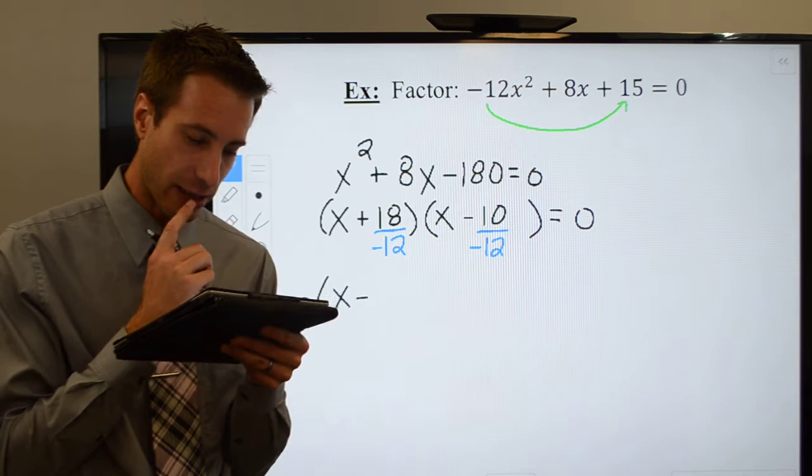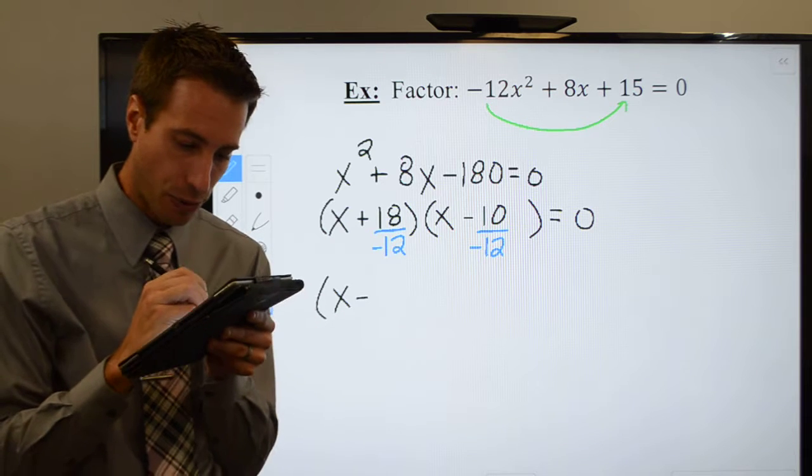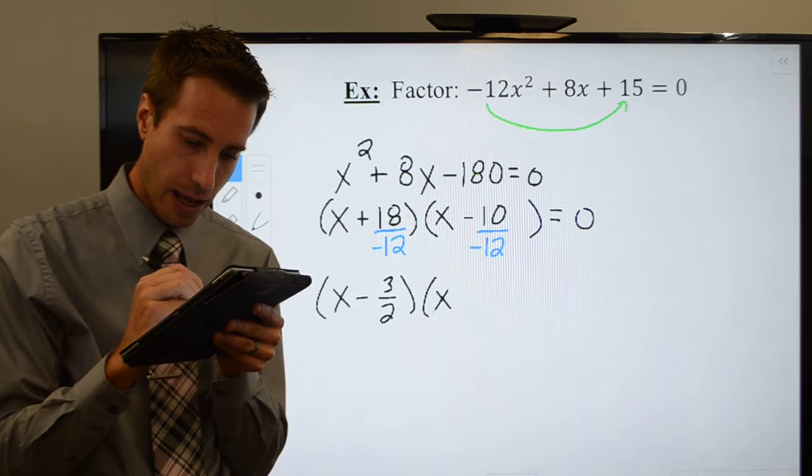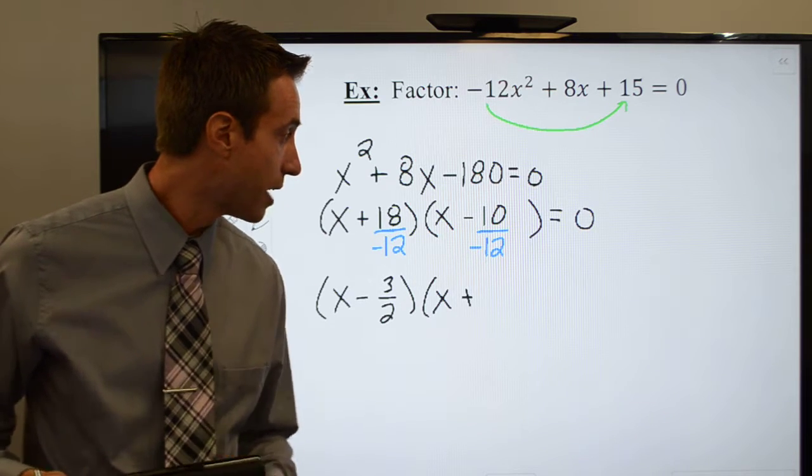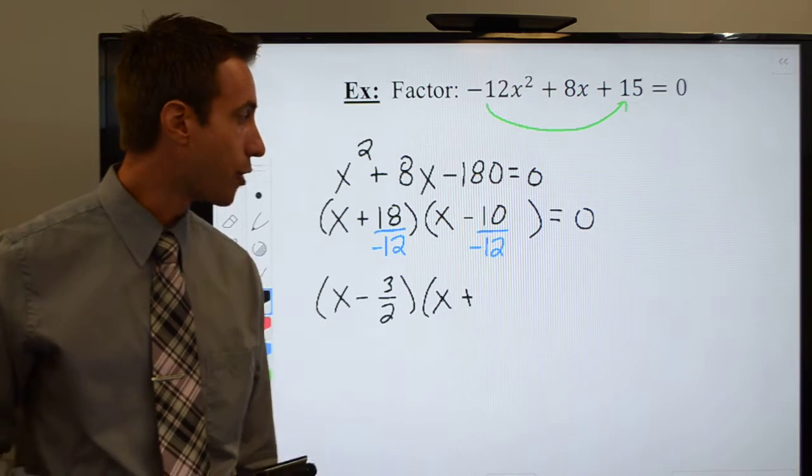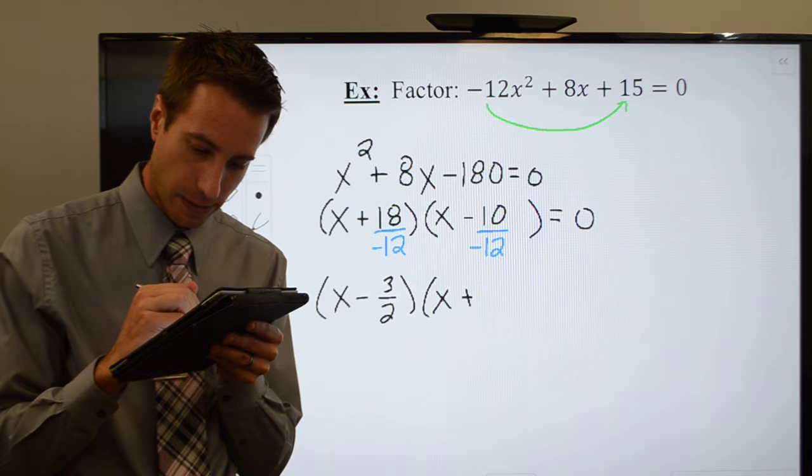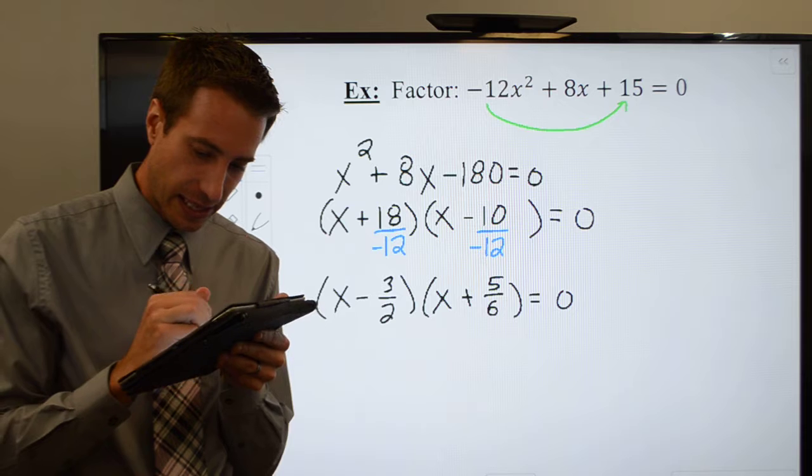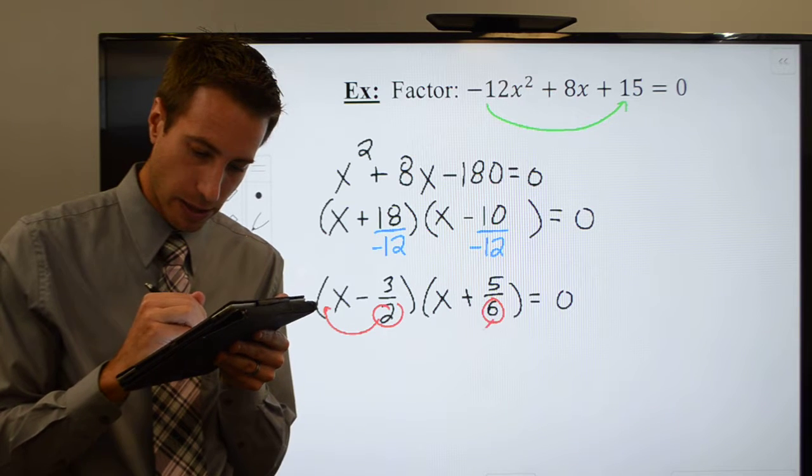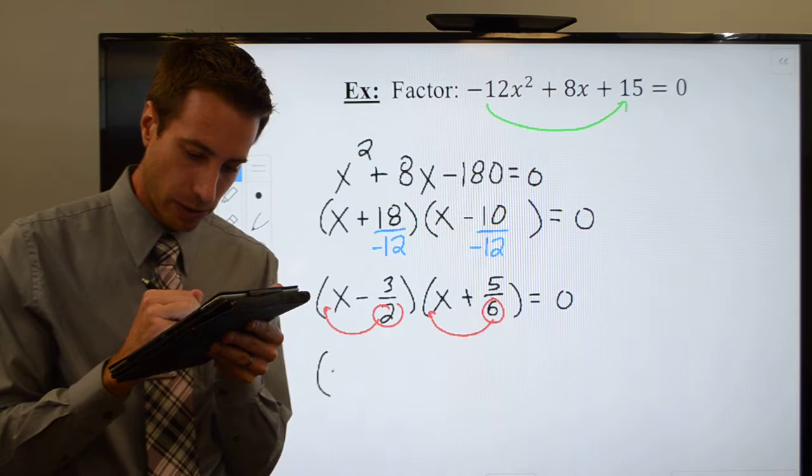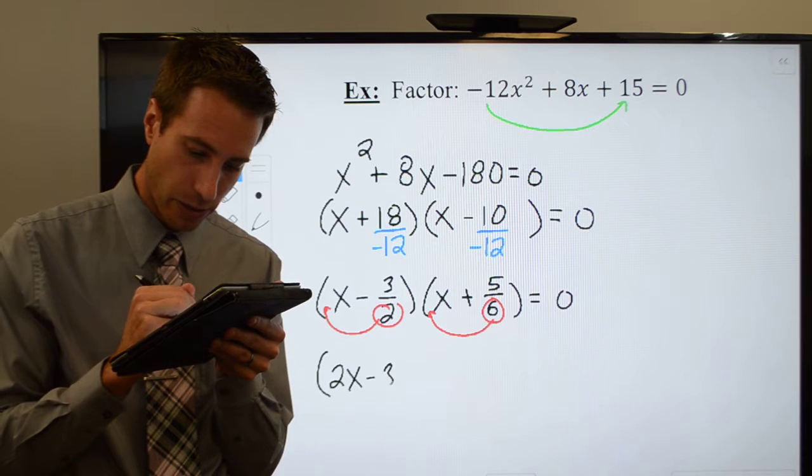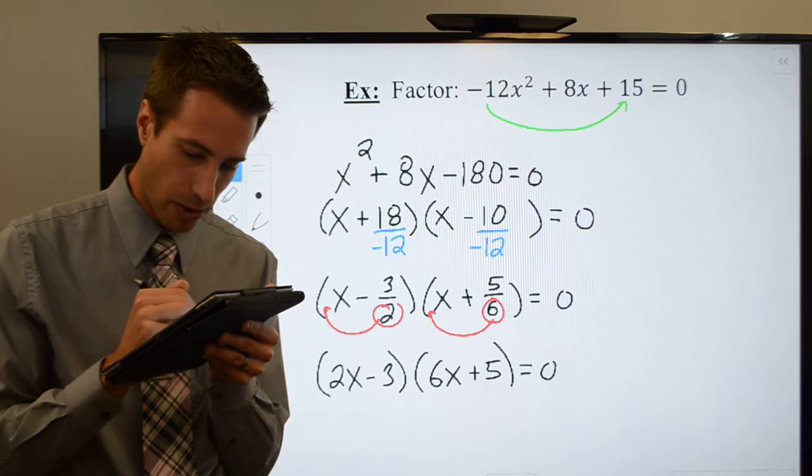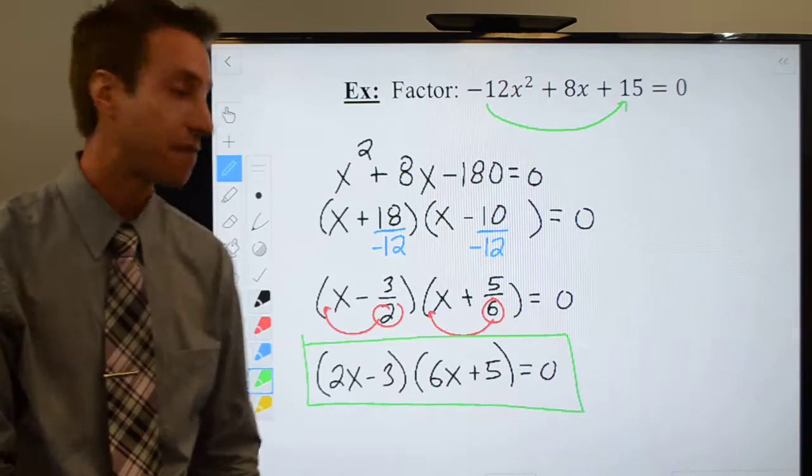I pull a 6 out of both of those, which is going to leave me with 3 halves. And negative and a negative will cancel each other out, leave you with a positive. And I can pull a 2 out of both of those, which will leave me with 5 sixths. Again, the last thing you need to do, take those denominators, move them out in front of the variable.